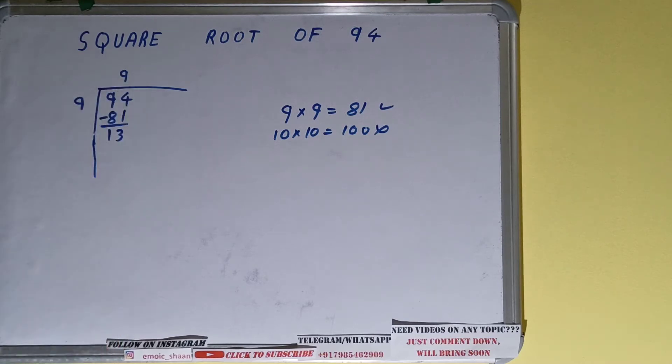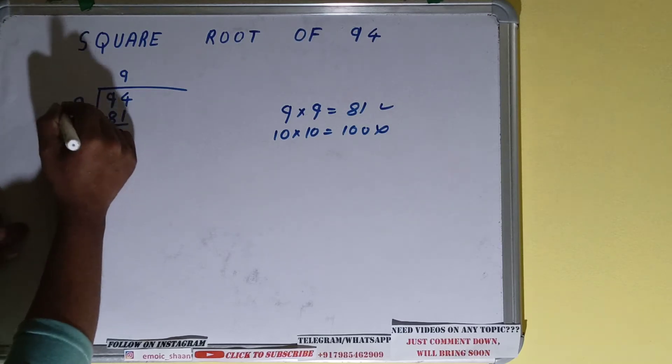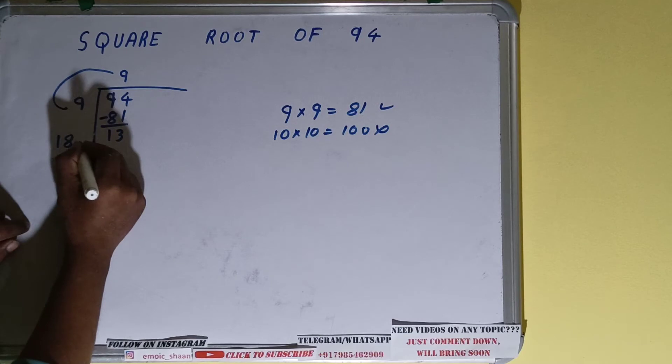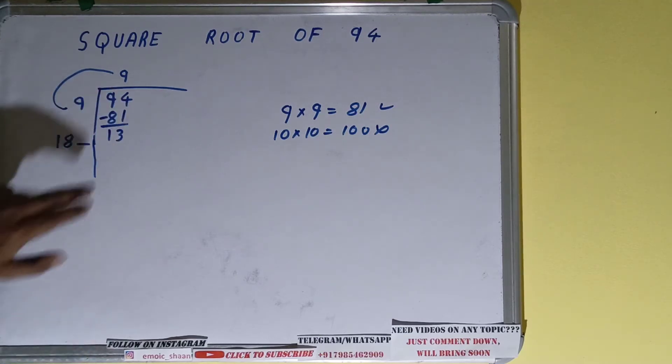Now what you need to do is whatever is your divisor, add with what you multiplied with. You did 9 into 9 right, so add 9 plus 9, it will be 18, and keep one digit extra over here.